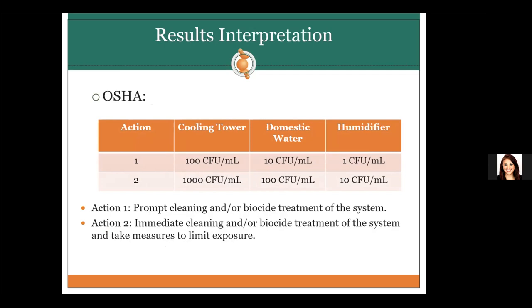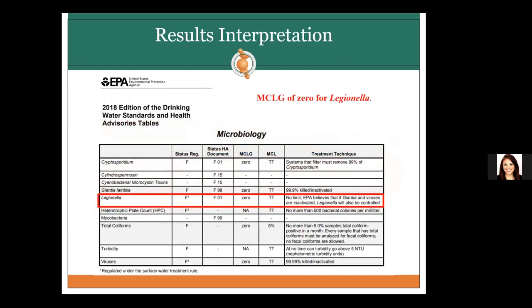After getting test results, how do you interpret them? OSHA has a recommendation table with two action levels. Action level one is prompt cleaning and biocide treatment of the system. Action level two is immediate cleaning or biocide treatment. When you have a higher bacterial load, you want to act quickly. EPA also has guidelines, with zero as the maximum concentration level goal.